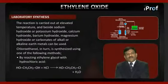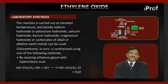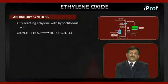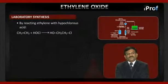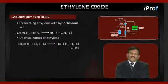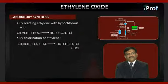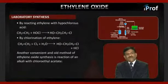One method is by reacting ethylene glycol with hydrochloric acid: HOCH2·CH2OH + HCl → HOCH2·CH2Cl + H2O. Another method is by reacting ethylene with hypochlorous acid: CH2=CH2 + HOCl → HOCH2·CH2Cl.